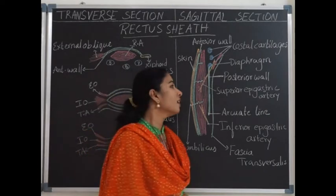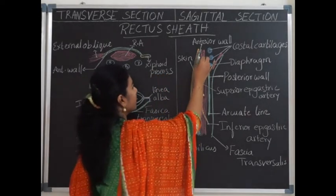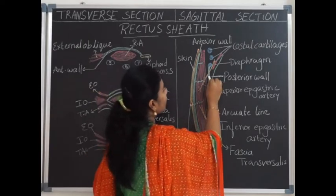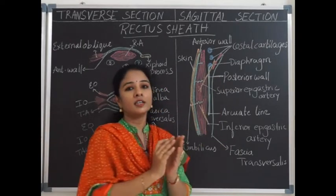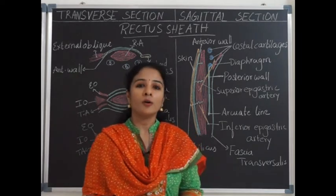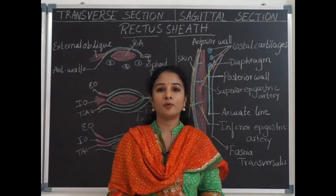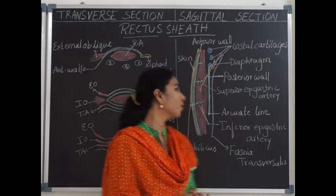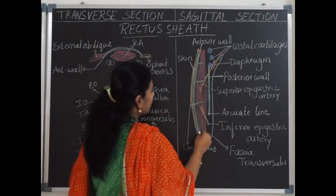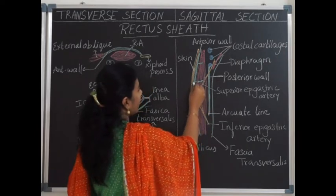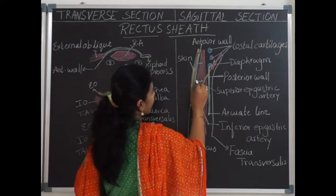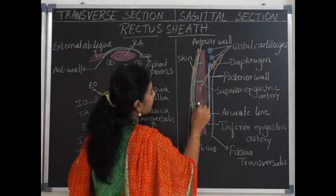We shall begin with the rectus sheath. The rectus sheath is a sheath covering the rectus abdominis muscle, and it has an anterior wall and a posterior wall which envelop the rectus abdominis muscle. These anterior and posterior walls are derived from the other muscles present in the anterolateral abdominal wall: the external oblique, internal oblique, and transversus abdominis. The anterior wall extends all through the length of the rectus abdominis muscle and is firmly attached to it through the tendinous intersections.